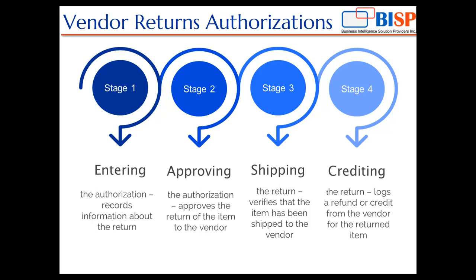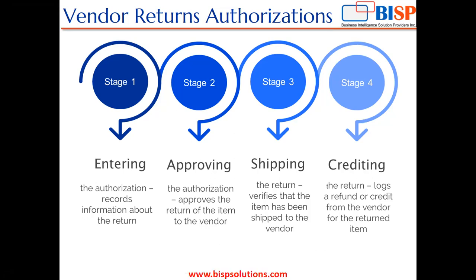Approving the authorization is when you approve the authorization and approve the return of the items to the vendor. The third stage is shipping the return. Shipping the return verifies that the items have been shipped back to the vendor and have been taken out from your warehouse and shipped to the vendor's location. And then is crediting the return. Crediting the return is logging a refund or a credit from the vendor for the items that you have shipped back to the vendor. This is the whole process flow of vendor returns into the Oracle NetSuite application.